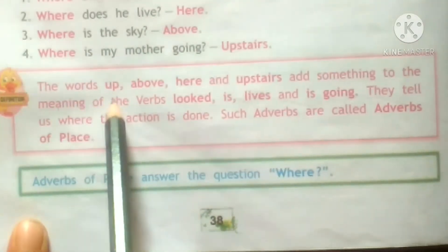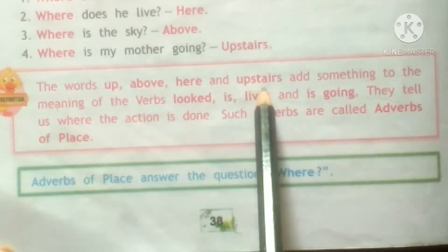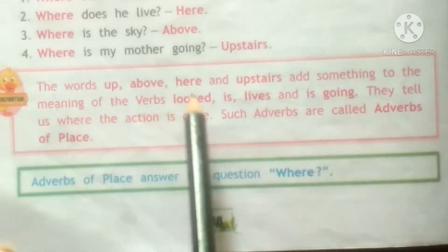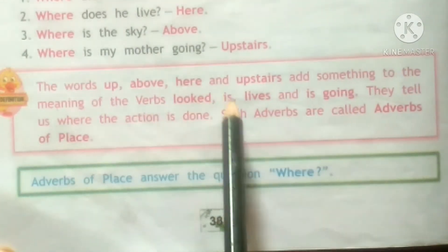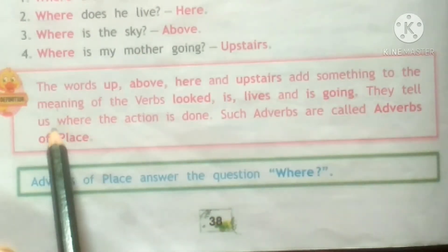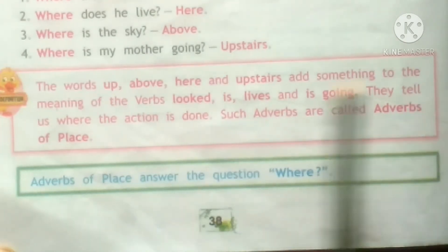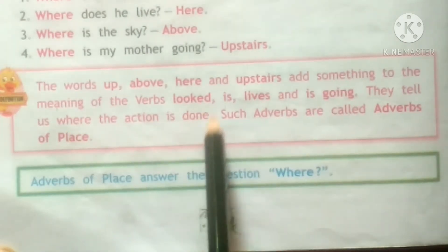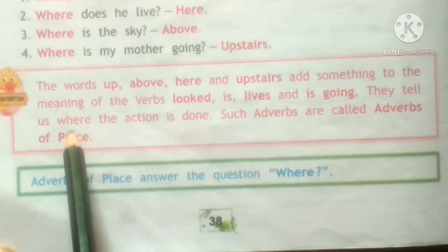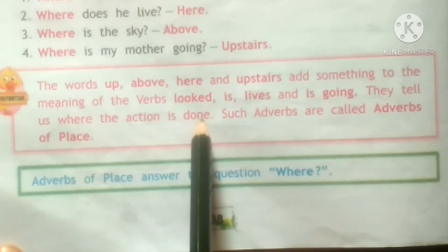The words up, above, here, and upstairs add something to the meaning of the verbs looked, is, lives, and is going. They tell us where the action is done — kansi jagga pe. So it shows place — kansi jagga pe action hui hai.